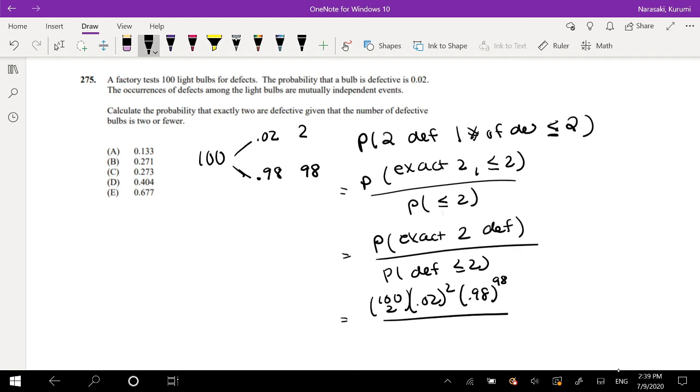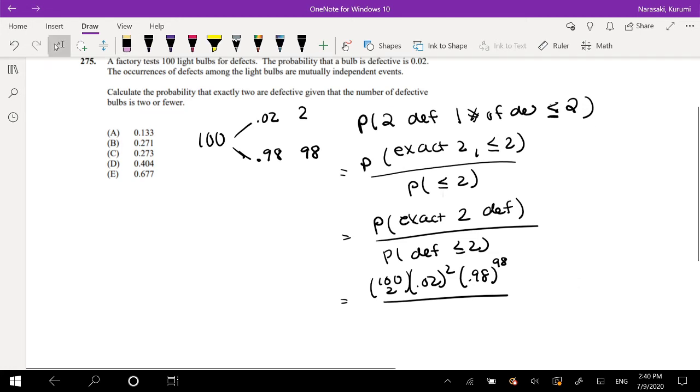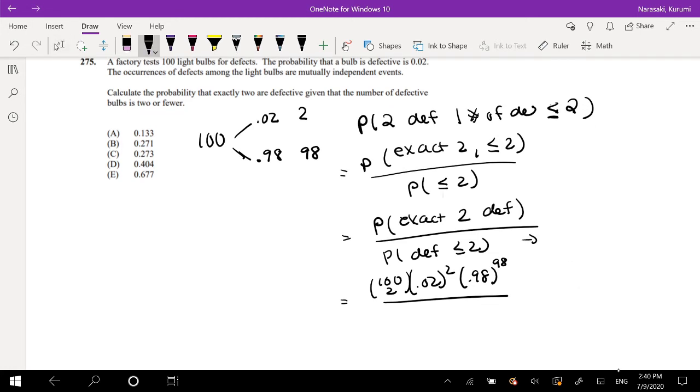And what's the probability that the defective amount is less than or equal to 2? Well, that's just equal to the defective amount is equal to 0 or 1 or 2, right?